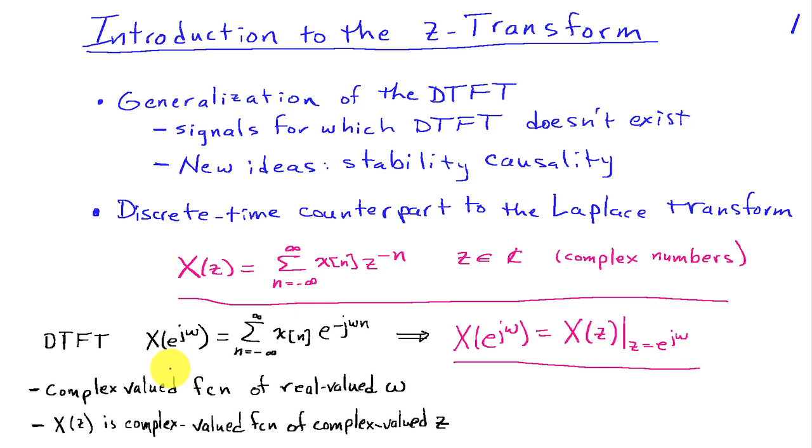So the DTFT is complex-valued but it's a function of a real-valued parameter, omega. So the Z-Transform generalizes that in that it's also complex-valued, but now it's a function of a complex-valued parameter, Z.